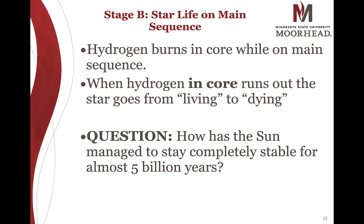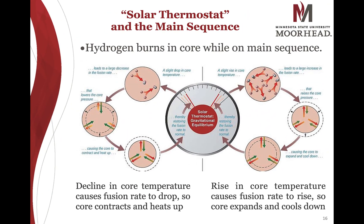The fusion rate is essentially self-regulating, which is why stars like the Sun can be stable for such a very long time. If the core were to get a little bit too hot, that would increase the fusion rate, which would increase the pressure and push things back out. If the core got a little bit too cool, that would decrease the pressure, gravity would pull the core in, heat it up, and increase the fusion rate until things were balanced again.